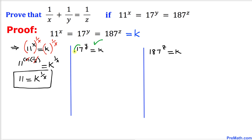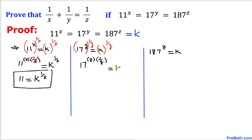Now focusing on 17^y = k, I want to isolate 17. Taking the power of 1 over y on both sides and applying the exponent rule, we get 17^(y · 1/y) = k^(1/y). The y and 1/y cancel, giving us 17 = k^(1/y).